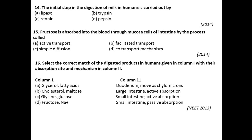Question number fifteen: Fructose is absorbed into the blood through mucous cells of the intestine by the process called facilitated transport. So option B is correct for this question.